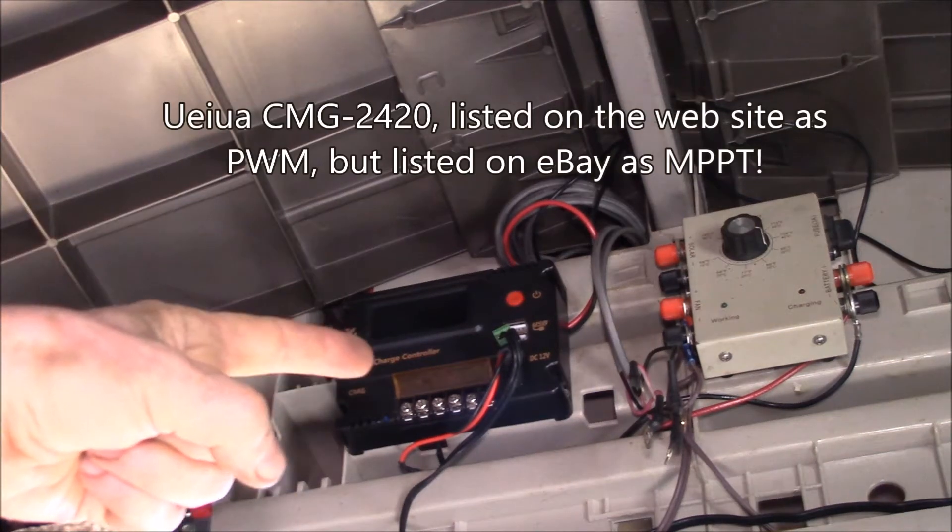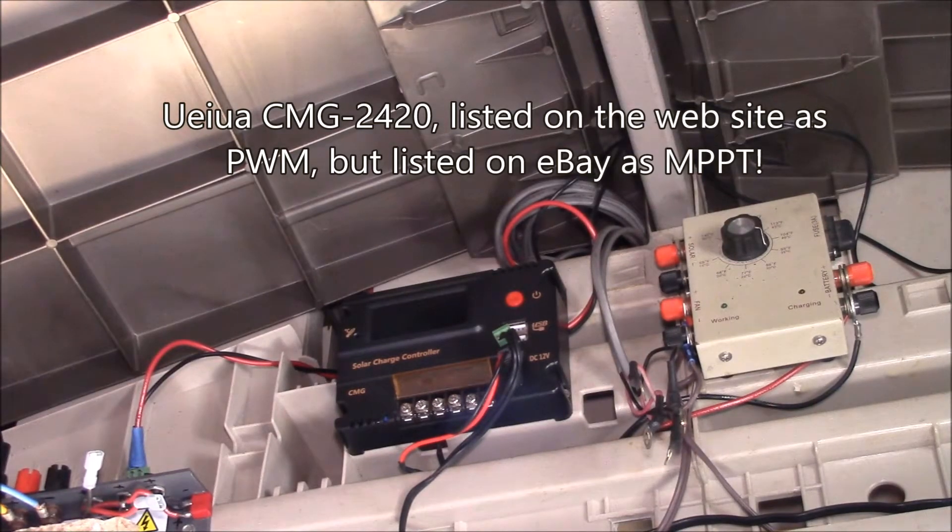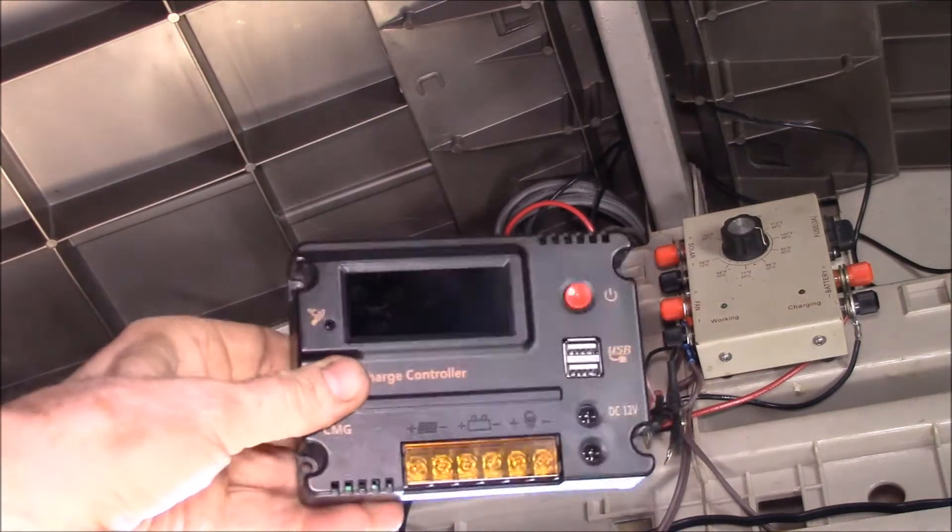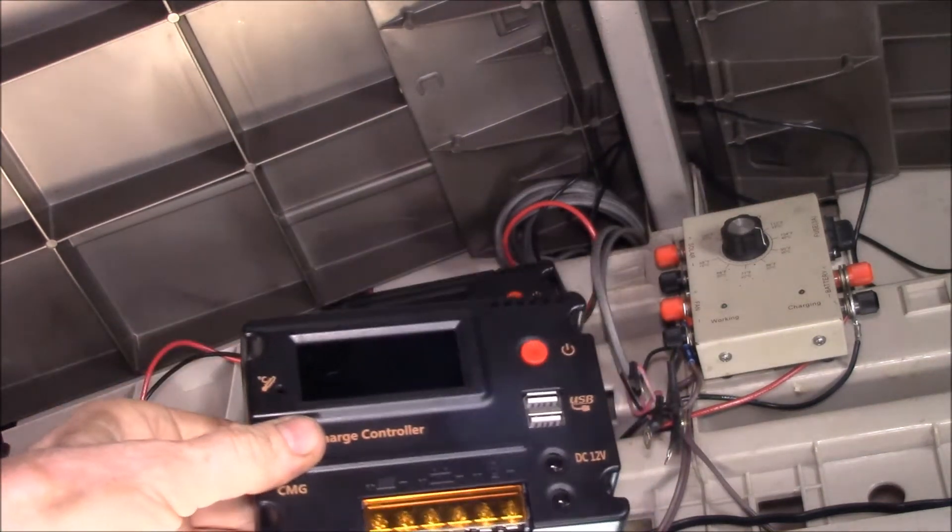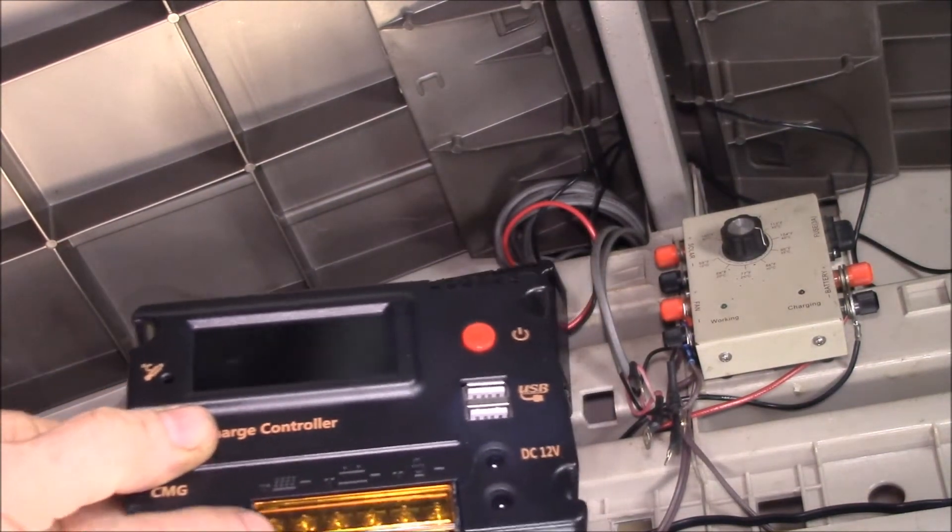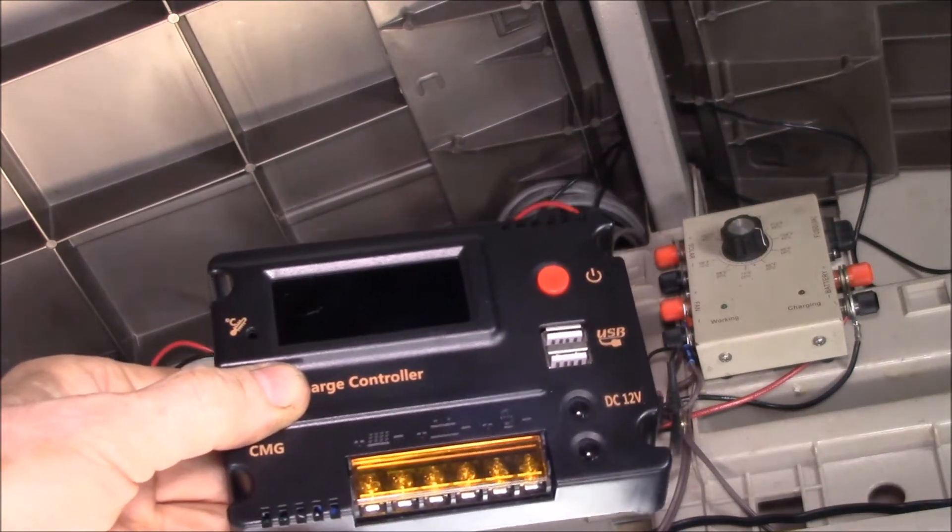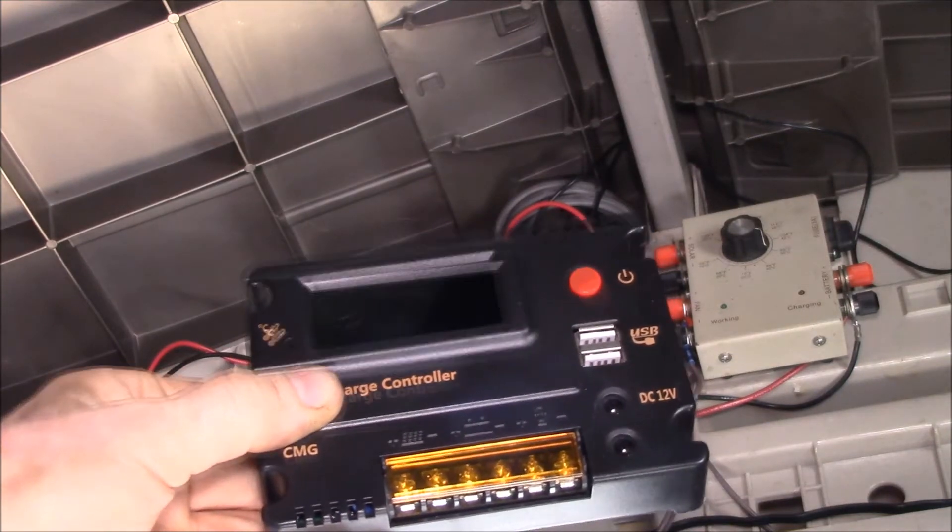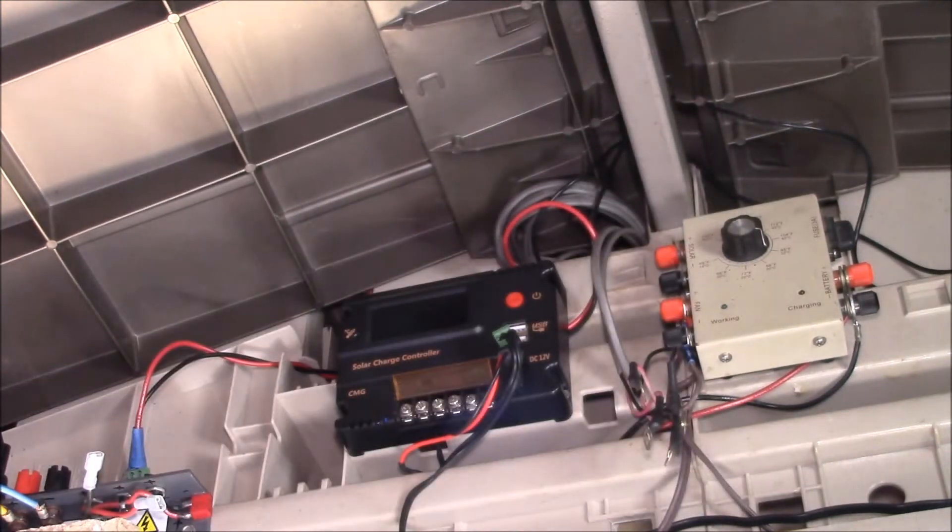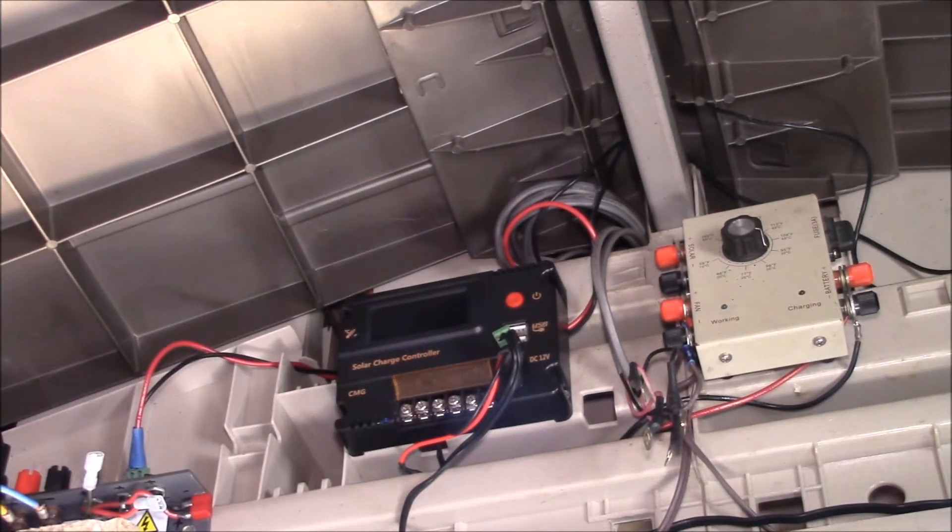So I had picked up a couple of these charge controllers, listed as a 20 amp MPPT charge controller. I'd been running this one for a while and it quit. I think it's got a problem with the internal power supply because it would kind of run, but as soon as you turned on the external load it would quit, just blank out, and then after a while it would reset. So I put the second one I'd picked up, and I'll do a separate video where I look inside and show you that these are not MPPT, they're just PWM charge controllers.